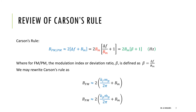Quick review of how we estimate the bandwidth. We have seen Carson's rule: the approximate bandwidth is twice delta_F plus P_m. We represented this in terms of the modulation index beta. The same formula — Carson's rule — applies for FM and PM, but the details will be different.